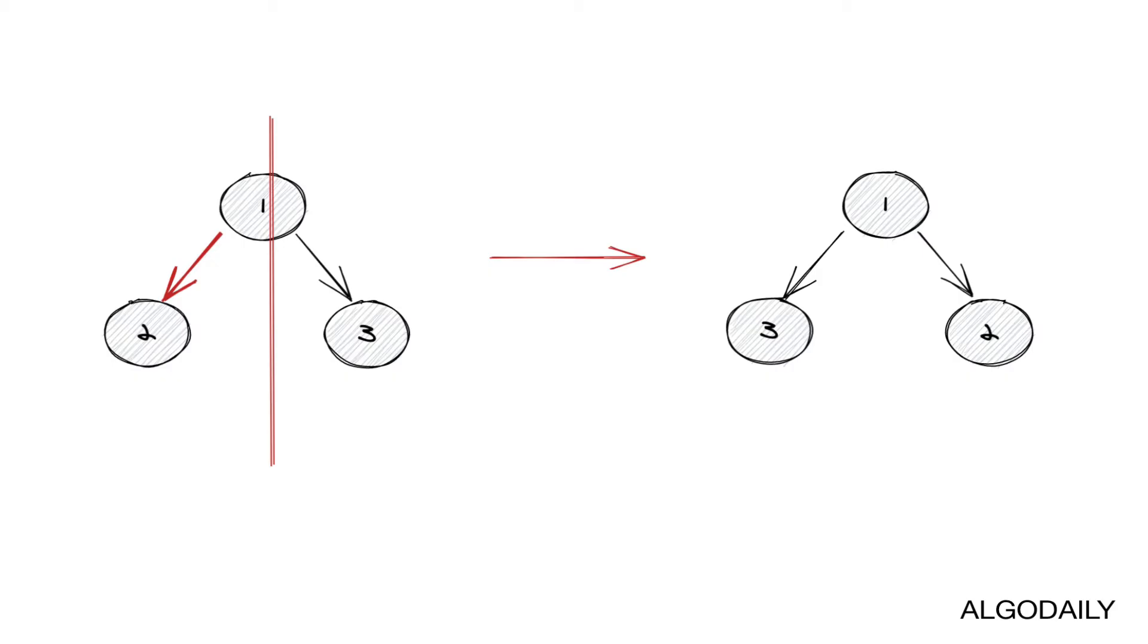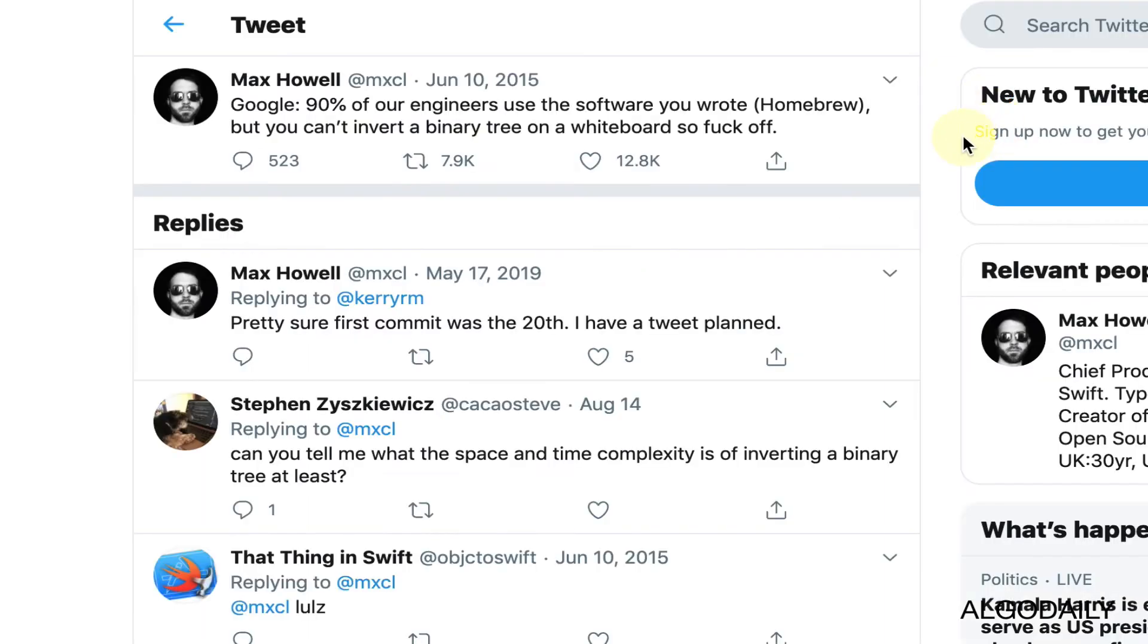Hey what's up everyone? It's Jake from AlgoDaily here and today we're gonna cover a really fun problem that is well known because of this tweet. So on June 10th, 2015, Max Howell, the author of Homebrew, the package management software for the Mac, tweeted this out.